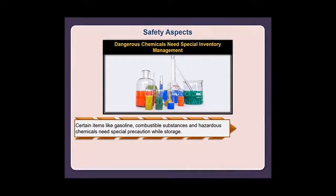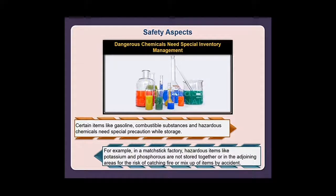Safety aspects: Certain items like gasoline, combustible substances, and hazardous chemicals need special precautions during storage. For example, in a matchstick factory, hazardous items like potassium and phosphorus are not stored together or in adjoining areas due to the risk of catching fire or accidental mix-up.